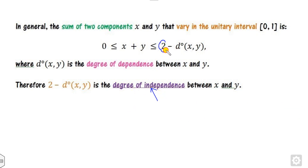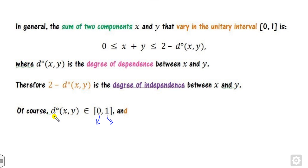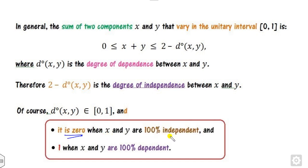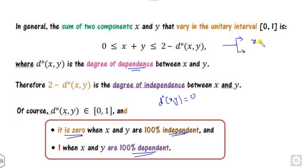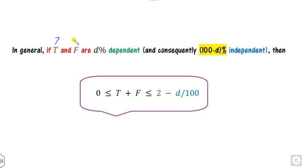Why is it 2? Because it consists of two elements. The degree of dependency always lies between 0 and 1. If d equals 0, x and y are totally independent. If d equals 1, x and y are totally dependent. So if we discretize into two portions, the sum will be either 2 when they are independent, or 1 when they are fully dependent. In general, if T and F are two dependent factors and the others are independent, their sum will always be 2 minus d.